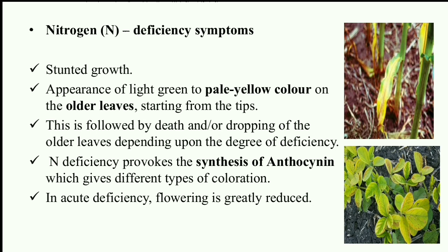First we discuss the deficiency symptoms of nitrogen. Due to nitrogen deficiency, plant growth will reduce and plants will appear stunted. There is an appearance of light green to pale yellow on the older leaves — this is called chlorosis, starting from the leaf tips. In severe conditions, leaf drop will start. Nitrogen deficiency also provokes anthocyanin production, and in acute deficiency, flowering is also reduced.